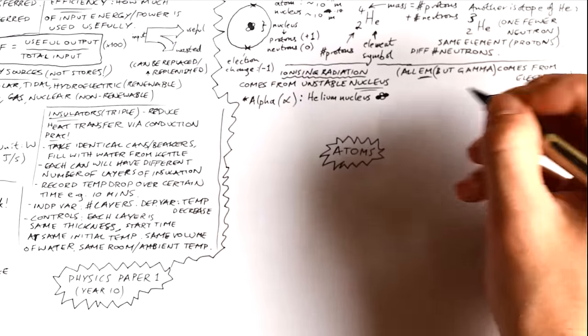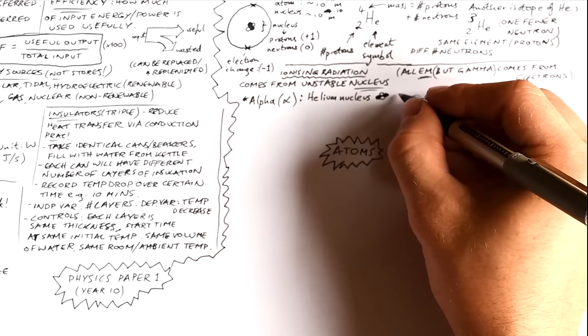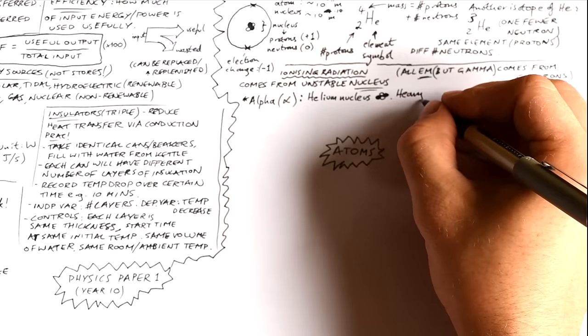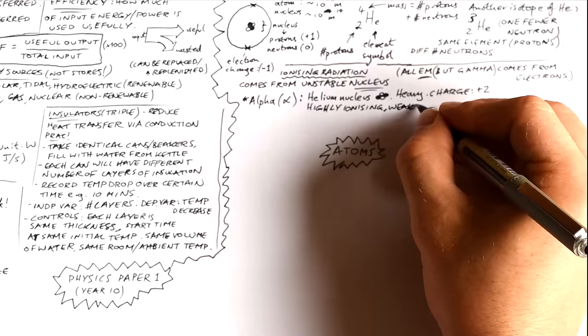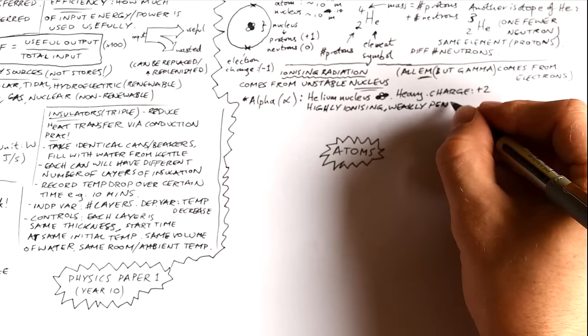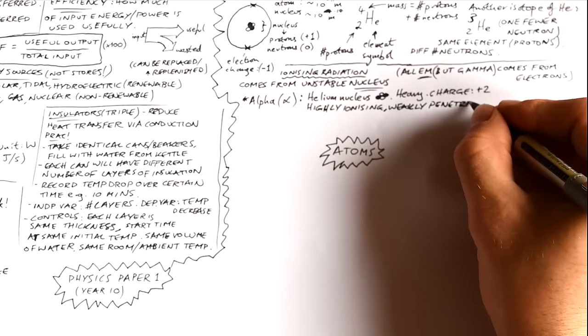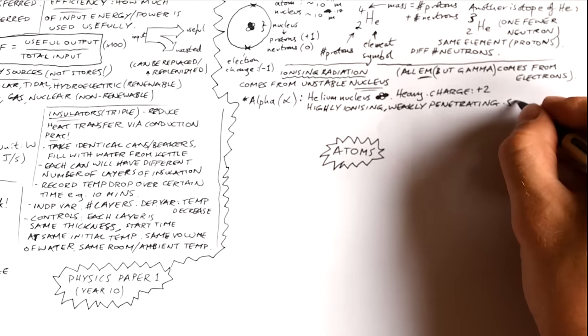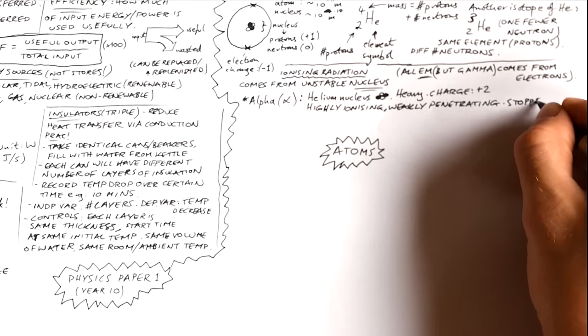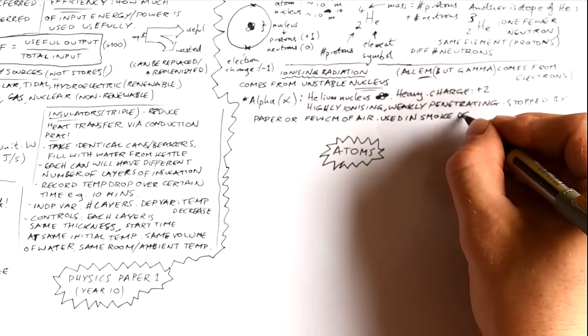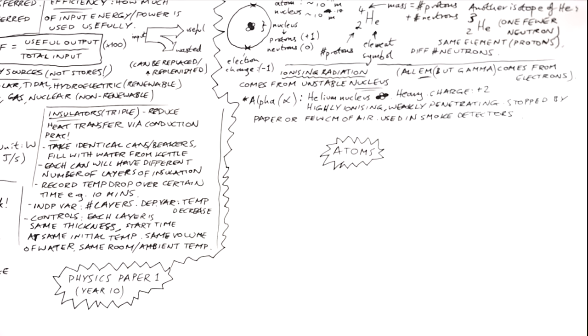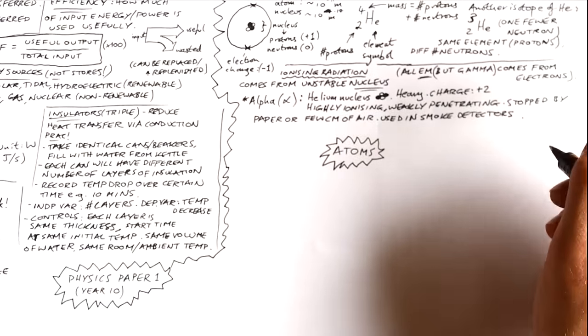First one is alpha. That is a helium nucleus. It's just what we've drawn before without the electrons. Because it doesn't have electrons, it's got a charge of plus two. It's very heavy. It has a lot of energy, so it can just barrel its way through atoms and just knock electrons off atoms left, right and center. It's highly ionizing. But because of that, it means that it's weakly penetrating. It gets stopped easily. It can be stopped by a piece of paper or a few centimeters of air. We can use it in smoke detectors. If everything's good, then the detector will detect alpha particles. But if there's smoke, it will absorb the alpha particles. And that will then cause the alarm to be triggered.